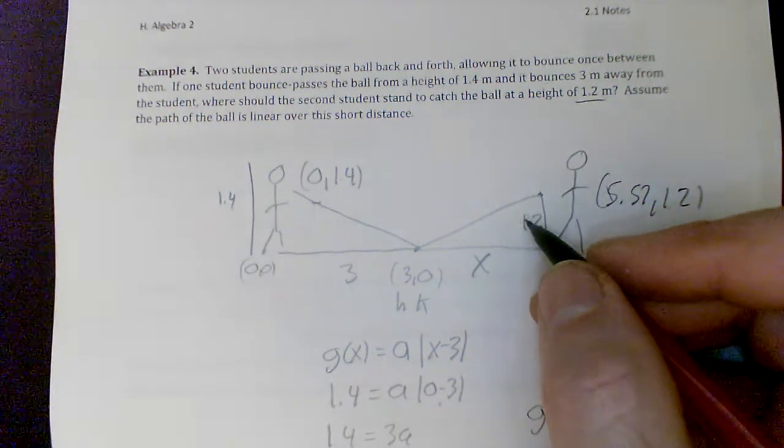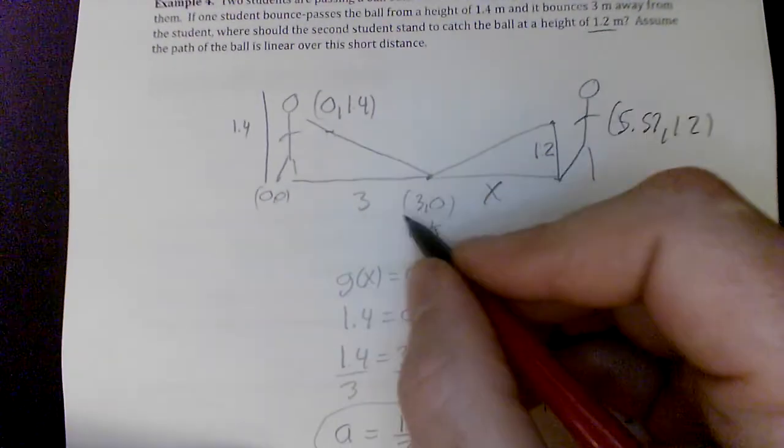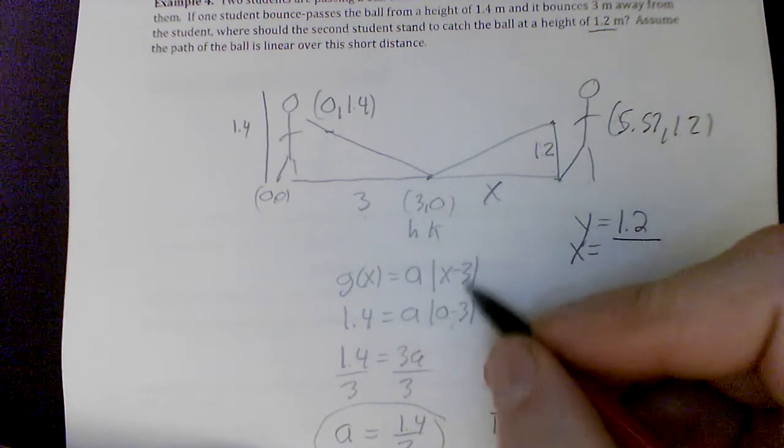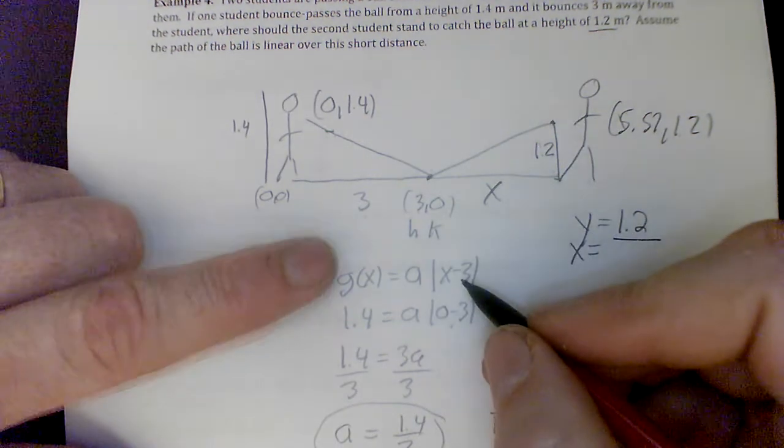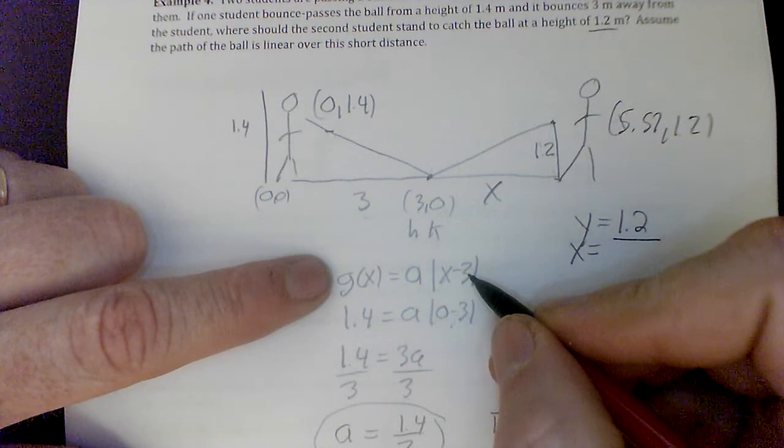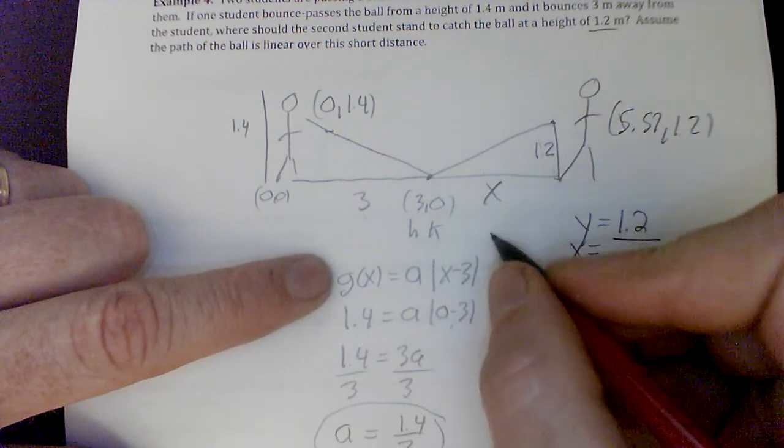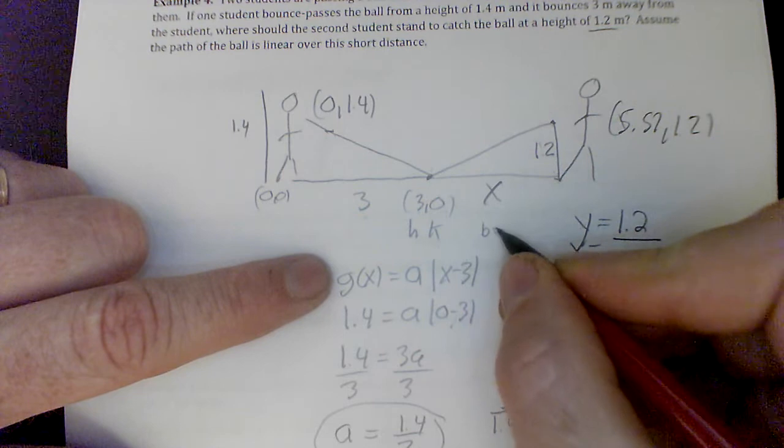So the equation, once again, is pretty easy. This gives us an x value. That gives us the k value, so I don't need to write k. And I get this. If I solve for a, I get g(x) equals a times |x - 3|. Given only an h value and nothing else, we'll assume b is 1.